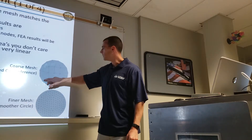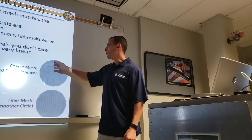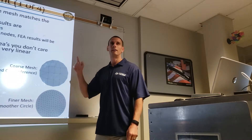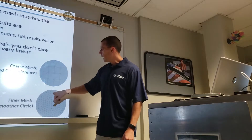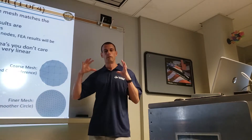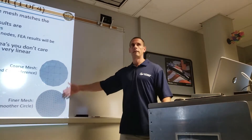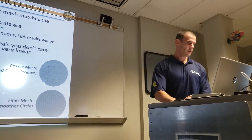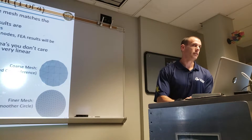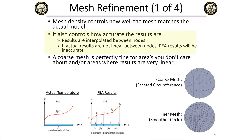If you had one element it would look like a triangle instead of a circle, but as you get finer and finer it starts looking like a circle again. That's the difference between a coarse and a fine mesh — you're approximating the geometry when you mesh it. This directly correlates to how accurate your results are going to be, because results are interpolated between nodes. If you have results that are non-linear between nodes, you won't get correct results.